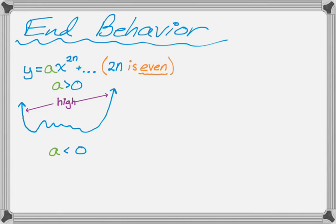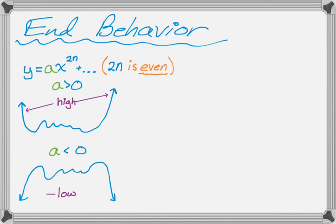And if the leading coefficient is negative and it's an even polynomial, every single one of them will eventually look like this, which I like to call low to low. So it starts low and it ends low.